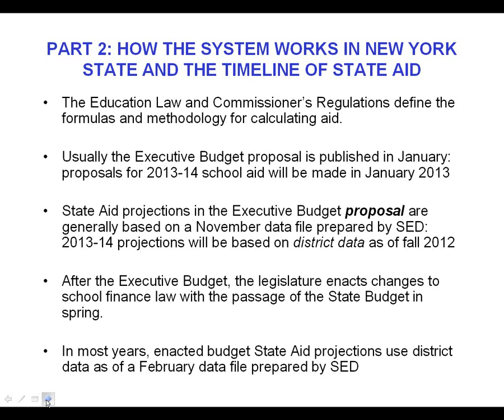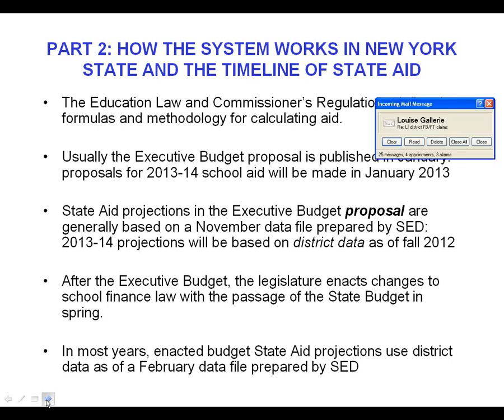It's important to remember that those numbers that come out in January — that's a proposal. It is not necessarily what you're going to get. It's not necessarily even the law that's going to be enacted, since the executive budget proposal starts the whole process. Then there are negotiations between the executive and the legislature, and ultimately the legislature enacts the changes. That usually ideally happens before the start of the new state fiscal year, before April 1. We've had years the state budget was very late — August, July — but it has been on time for several years now.